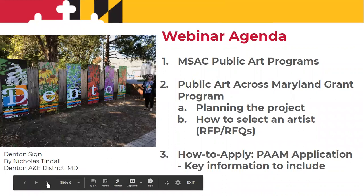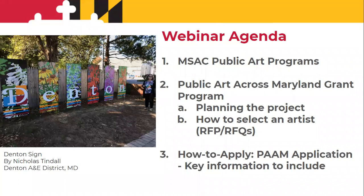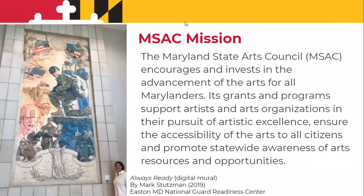In our agenda, we will be reviewing the public art programs here at the Maryland State Arts Council. We have two programs: the Public Art Across Maryland program, as well as the Maryland Public Art Initiative. We're going to focus on the Public Art Across Maryland program. We'll be reviewing how to plan a project, how to select an artist, the RFP and the RFQ process. We'll also be going through the PAM application and reviewing key information you'll need to include if you apply.